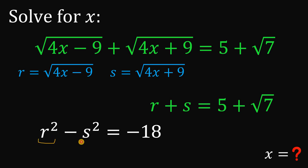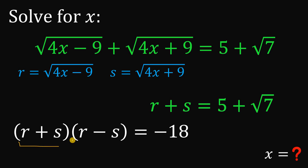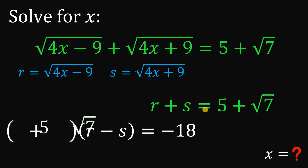We can apply the difference of two squares to r squared minus s squared and factor it as r plus s multiplied by r minus s equals negative 18. The good thing about factoring this way is that we already have a value for r plus s — it equals 5 plus square root of 7. So we can replace r plus s with 5 plus square root of 7.